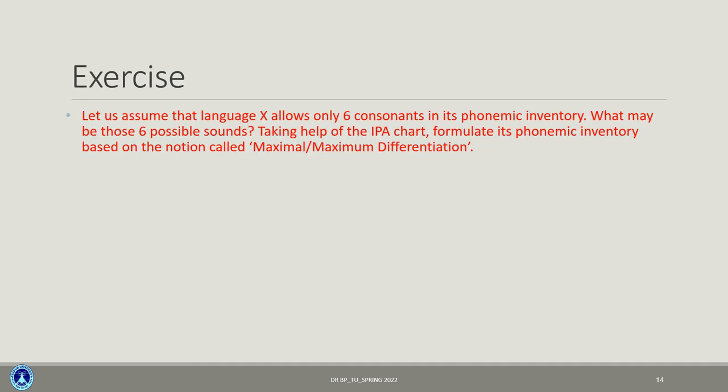Here is an exercise for you: assume that language X allows only six consonants in its entire phonemic inventory, exploiting all manners and all places of articulation but only six consonants are allowed. Using the IPA chart, what may be the six most plausible sounds in this language? Formulate its phonemic inventory based on the notion of maximum differentiation. You can draw it in a PowerPoint slide, convert it to a JPG file, and send it back to me.